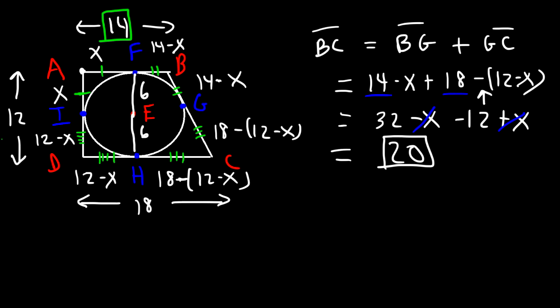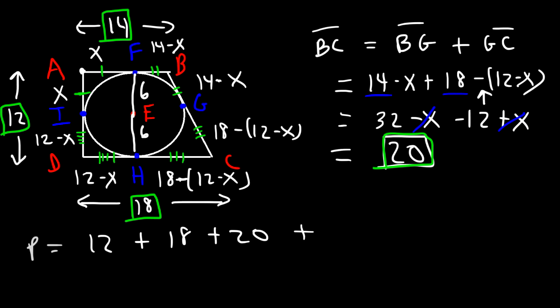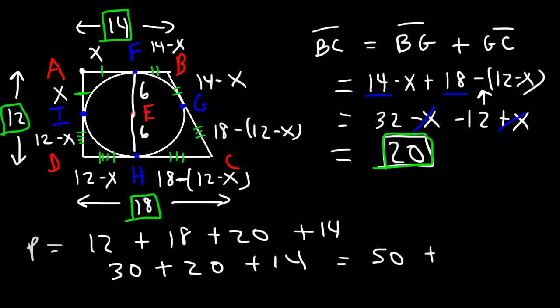Now we have all four sides: AB is 14, AD is 12, DC is 18, and BC is 20. The perimeter is 12 plus 18 plus 20 plus 14. That equals 64. That's how you solve this walk-around problem for a quadrilateral circumscribed about a circle. Thanks for watching and have a good day.